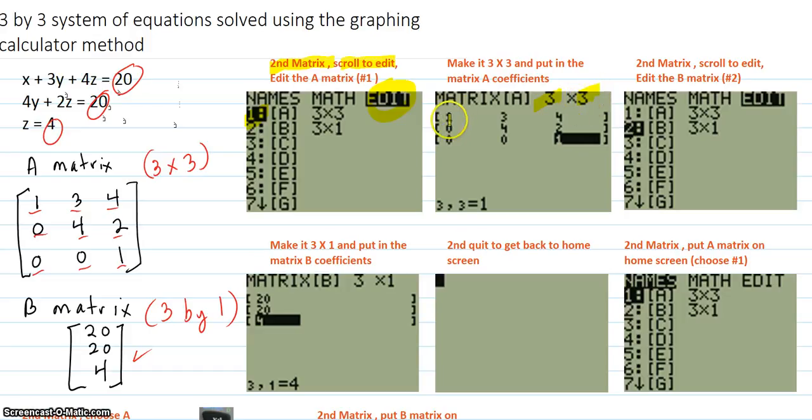Put the 1, enter, 3, enter, 4, enter, 0, enter, 4, etc. Put all these in, and enter.